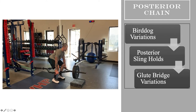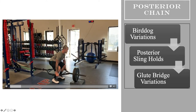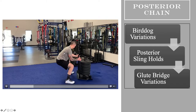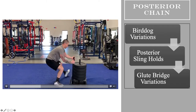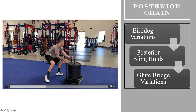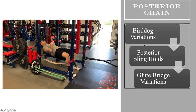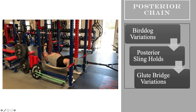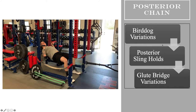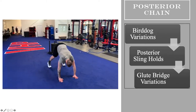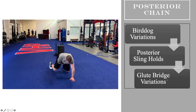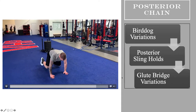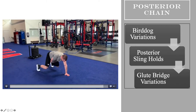Looking at the posterior chain, you can see tempos are included — multi-speeds, multi-velocities. A really good one here: lat-glute, lat-glute, keeping everything intact. Our basic variations are bird dogs, posterior sling holds, and glute bridge variations. You could have a situation where you never go beyond a bird dog, that sling hold, and a glute bridge, and say you have successfully trained the posterior chain. It does not require anything fancy or complex. Once we reach those points with capable athletes, we progress to more advanced movements.